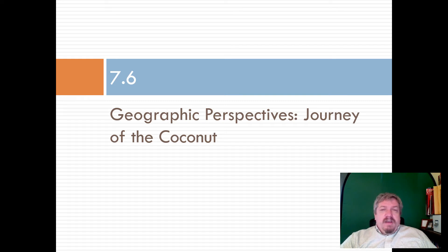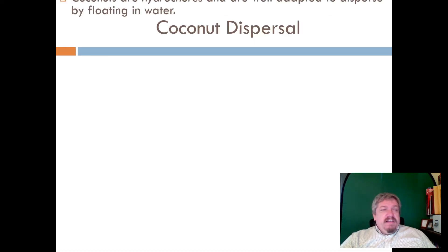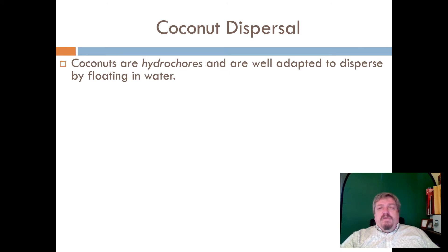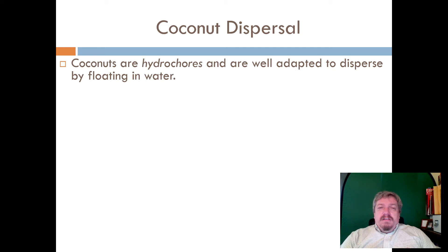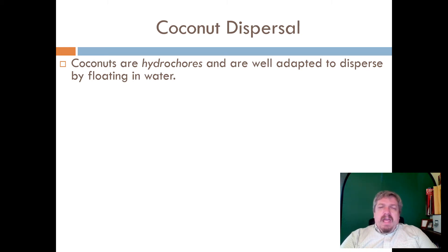Now we'll wrap up with the human story of biogeography, and the coconut is a great example. Coconuts come from palm trees — the coconut is the seed of a palm tree, but it evolved a very unique way of dispersing. It looks like a big hunk, it's pretty waterproof, so if a coconut falls onto a beach and rolls into the ocean it will float, and it can float for a long time.